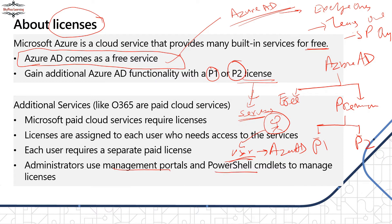Once you purchase the license from Microsoft, you can assign it to individual users. Administrators can assign licenses through the management portal or by using shell — both methods work. P1 and P2 licenses contain additional charges along with premium services. We'll cover what those additional features are in upcoming videos and why you would take a premium paid service.